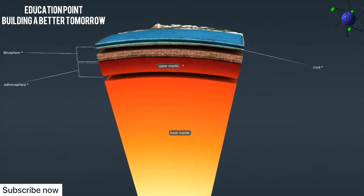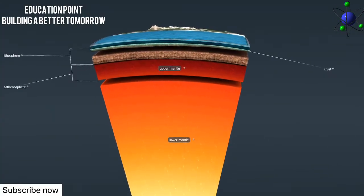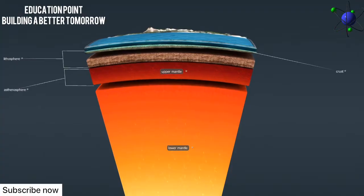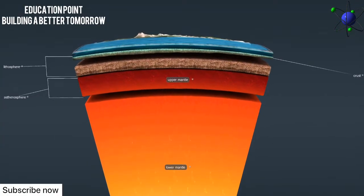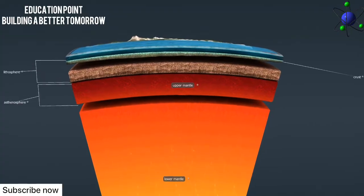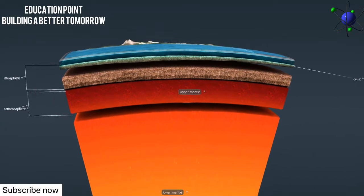On average, it is 50 km thick beneath the oceans and 70 to 100 km thick under the continents. The continental lithosphere and the oceanic lithosphere also differ in composition. The continental crust floats on the asthenosphere, the viscous upper part of the mantle that lies beneath the lithosphere.